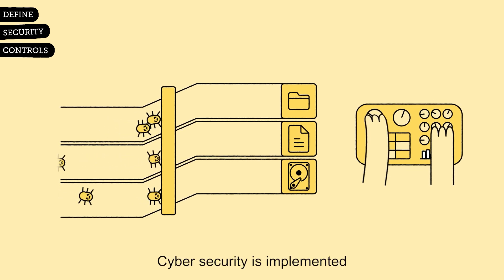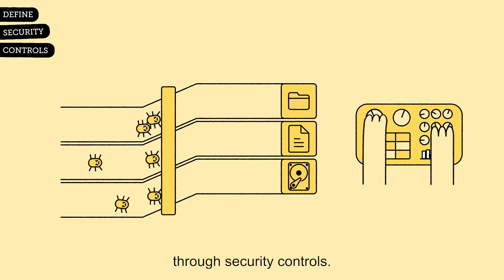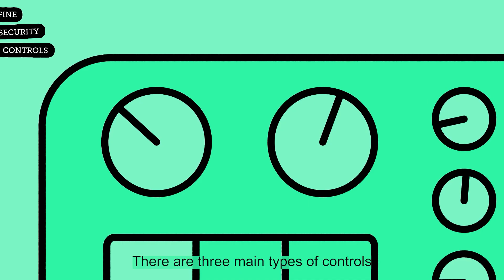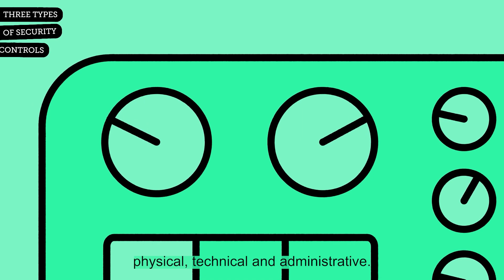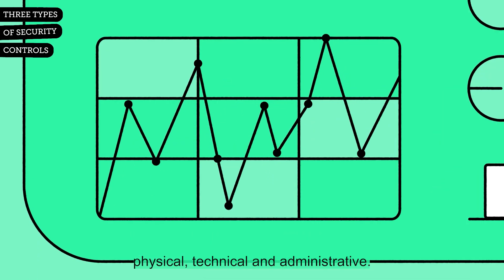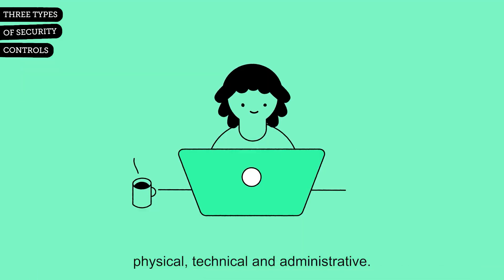Cybersecurity is implemented through security controls. There are three main types of controls: physical, technical and administrative.